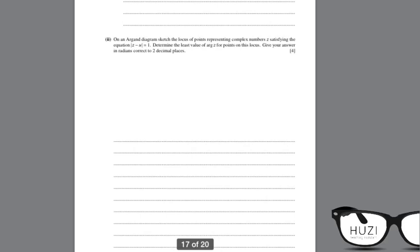On an Argand diagram, sketch the locus of points representing complex number z satisfying the equation |z minus u| equals 1. This is a circle. u was 1 plus 2i. Mark 1, i, 2i on the axes. The center is at 1 plus 2i. This is at 2, a rough sketch. We have points at various positions on the circumference. This is 3i. We have 4 points of the circle sketched.